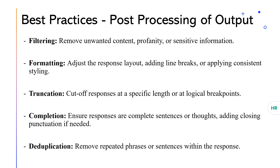The last topic is post-processing. Once the LLM has generated its response, it's not always ready for use. The first step is filtering — sifting through the output to remove profanity, sensitive information, or any content that doesn't align with our desired output, like a digital bouncer keeping out the undesirables. Next is formatting: adding line breaks for readability, applying consistent styling for a professional appearance, and ensuring the overall structure is clear and easy to follow — transforming plain text into a beautifully formatted document.